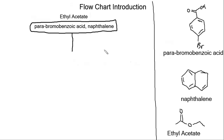If we want to separate these two compounds from each other, we need to add an aqueous solution — something not soluble in ethyl acetate — that will separate them. To react with our parabromobenzoic acid and make it a water-soluble salt, we need a basic aqueous solution. We're going to use a 10 percent sodium hydroxide solution.